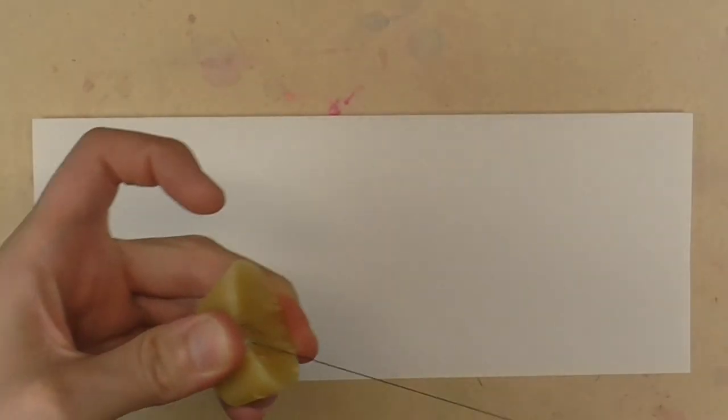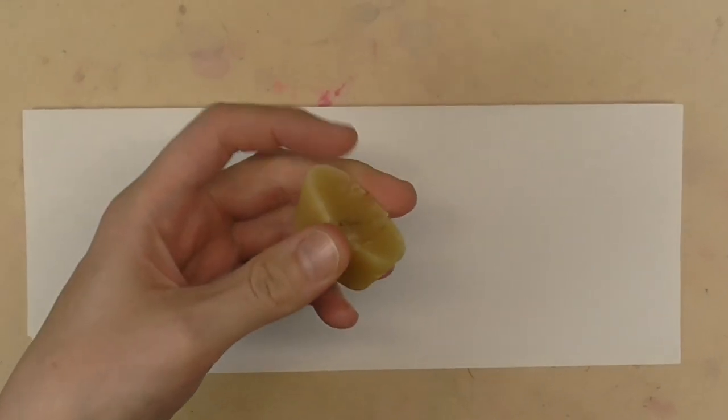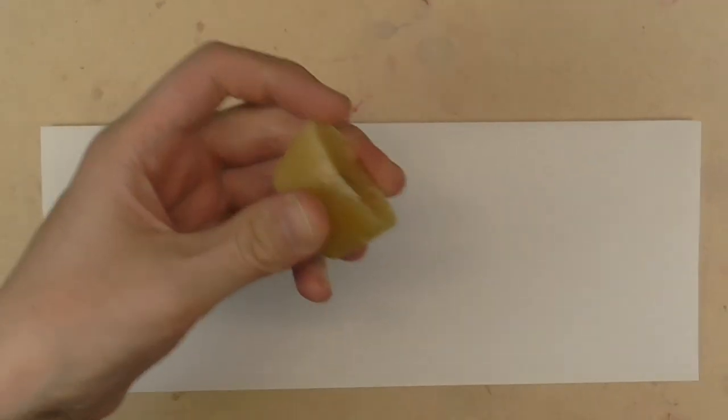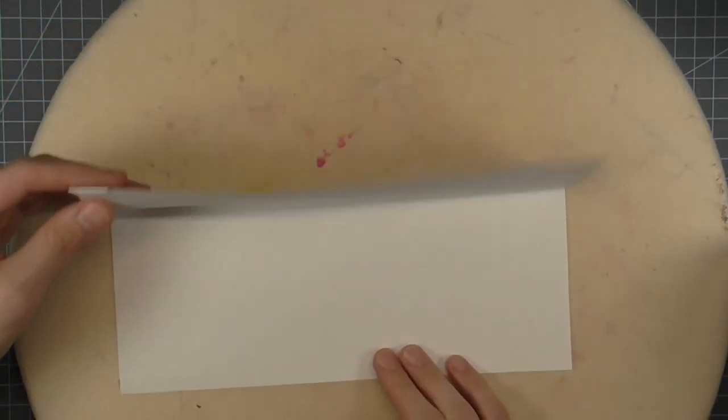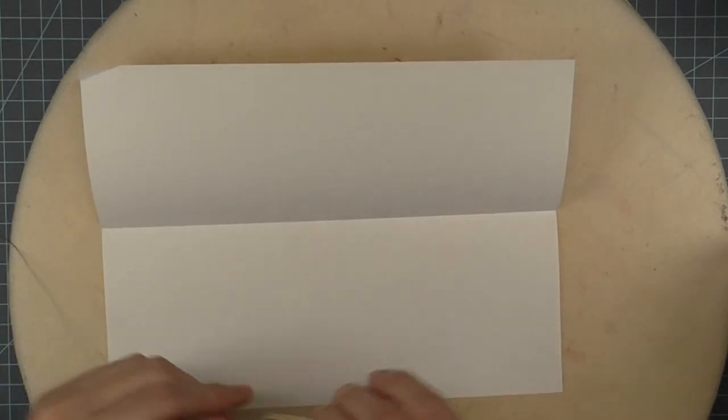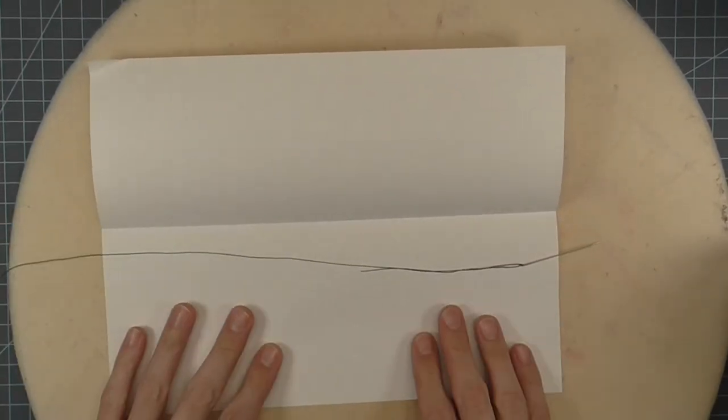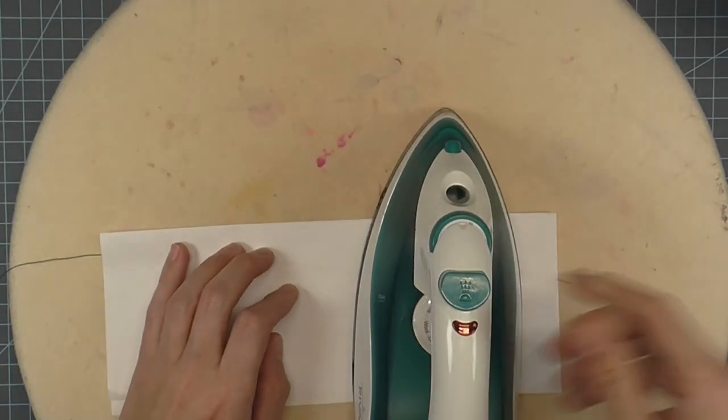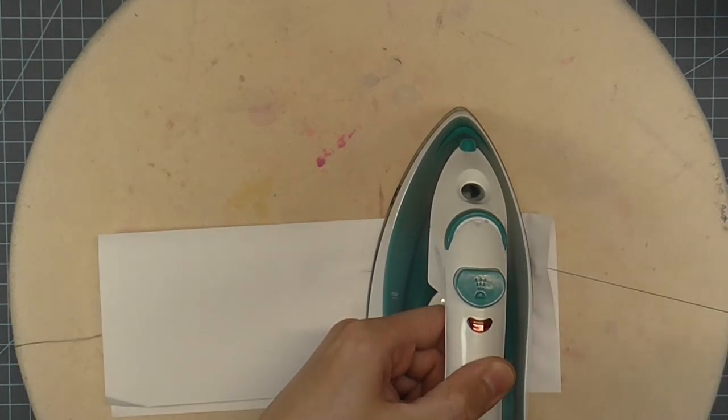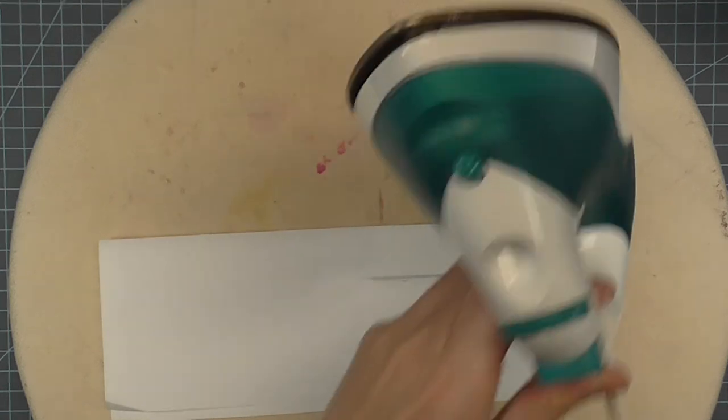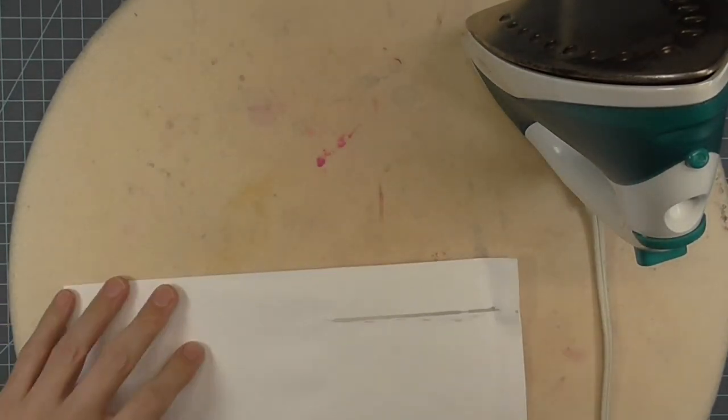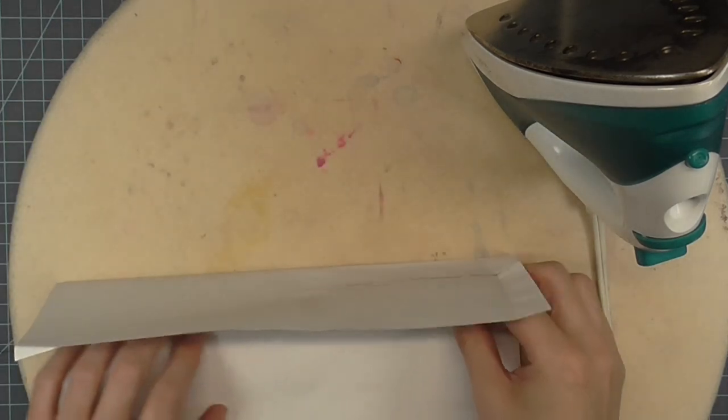Run the thread through the wax to coat it. I do this a couple of times. Place the waxed thread in the fold of a scrap of typing paper with the needle just sticking out. With a hot dry iron, press down on the paper and pull the needle running the wax thread under the hot iron. The heat melts the wax into the thread and leaves the residue on the paper. Repeat this once more to remove the remaining residual wax from the surface of the thread.